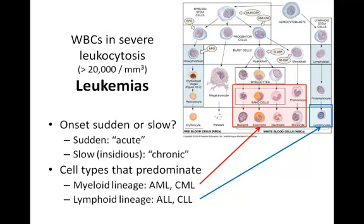There are two possibilities for leukemia onset: either sudden (acute) or slow (chronic). We pair those words with the predominant cell type — either granulocytes and monocytes (cells of the myeloid lineage) or lymphocytes. Two times two is four, and there are four leukemias we're studying: acute myelocytic, chronic myelocytic, acute lymphocytic, or chronic lymphocytic. CML, or chronic myelocytic leukemia, is most common in middle-aged and older people, while ALL, acute lymphocytic leukemia, is the most common type in children.